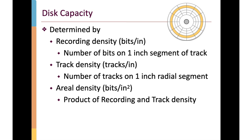How do we determine capacity? We're storing individual bits as small magnetic domains on each platter's surface. We can think of recording density — the number of bits per inch as the disk rotates — and track density — the number of tracks per inch across the radius. Recording density is measured in bits per inch and represents how many bits fit on a one-inch strip as it spins under the heads. Track density is measured in tracks per inch. The areal density is the product of these two: recording density times track density gives bits per square inch of disk surface.